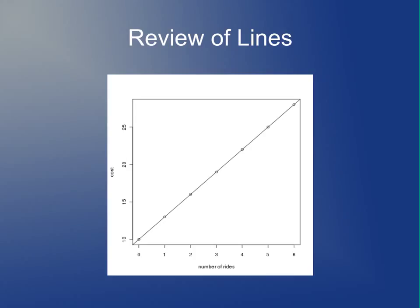The next slide shows a plot of the total cost versus the number of rides — just a graph of the table from the previous slide. It looks linear: for zero rides it costs $10, one ride is $13, two rides is $16. If you plot those against each other, you get a straight line. That's why it's known as a linear function.